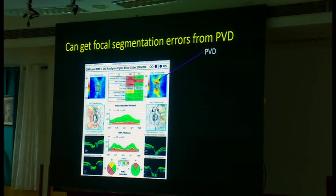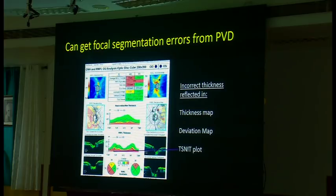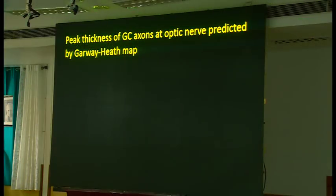You can also get focal segmentation errors. Here is a patient who had a posterior vitreous attachment shown as a small black circle, and that small black area intersects the TSNIT circle shown in the deviation map. You can see an abnormal area there, the thickness goes to zero in the TSNIT plot, and the superior quadrant is erroneously called abnormal.